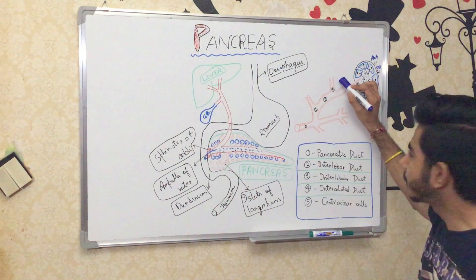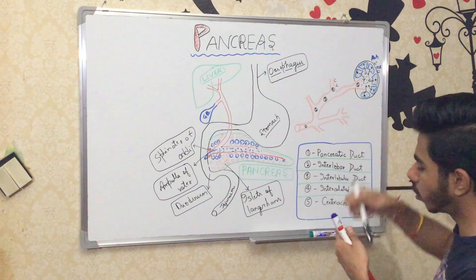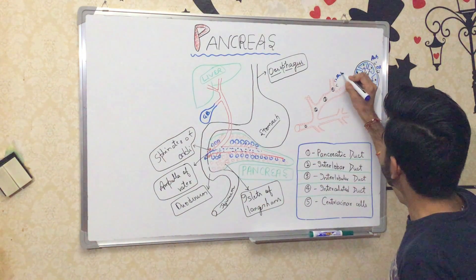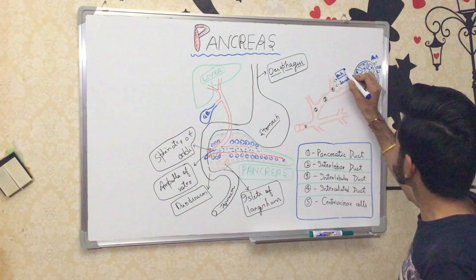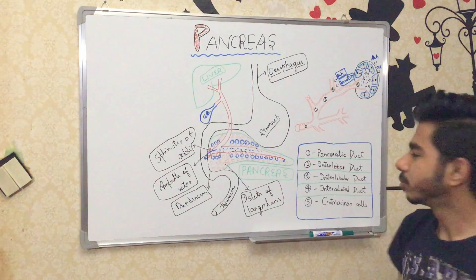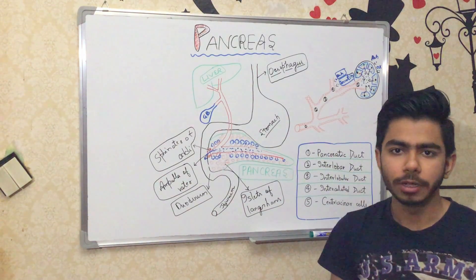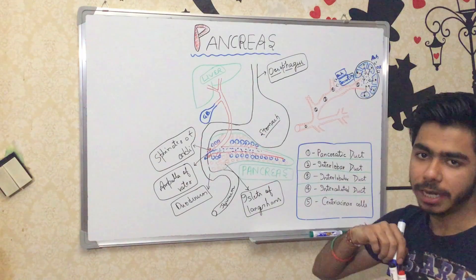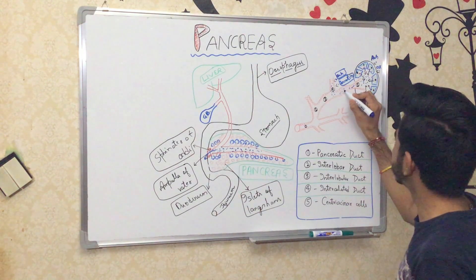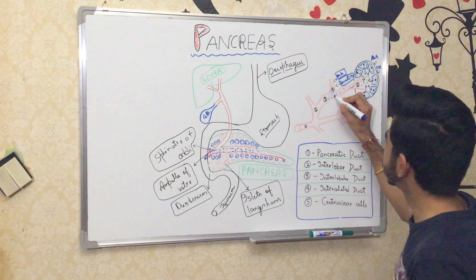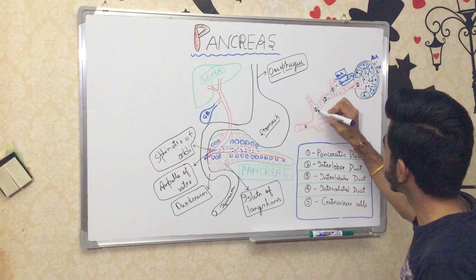The intercalated duct cells also have receptors for acetylcholine and secretin. Whenever acetylcholine and secretin bind to these receptors, the cells start producing bicarbonate ions and releasing them into the duct. The bicarbonate ions mix with the enzymes coming from the acinar cells and flow together through the intercalated, interlobular, and interlobar ducts, and finally into the pancreatic duct.